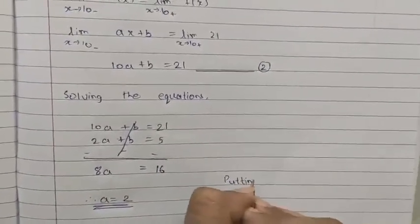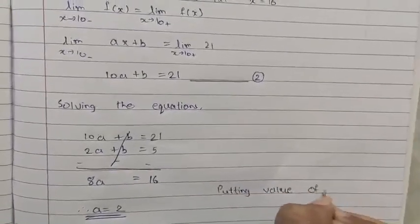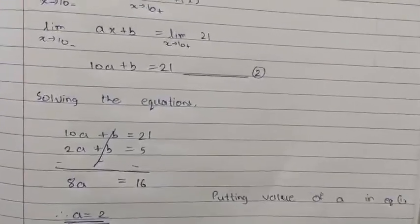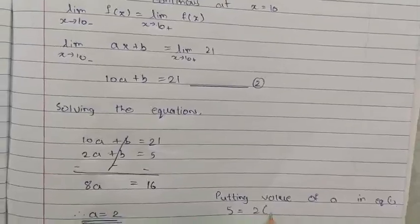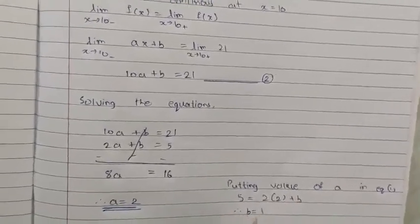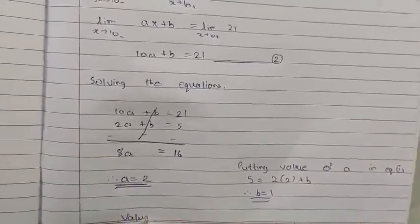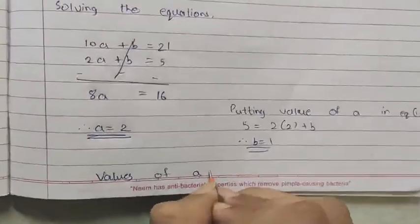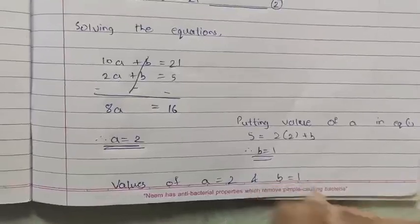Solving the equations: 10a + b = 21 and 2a + b = 5. Subtracting, we get 8a = 16, therefore a = 2. Putting the value of a into equation 1: 5 = 2·2 + b, therefore b = 1. So, a equals 2 and b equals 1.